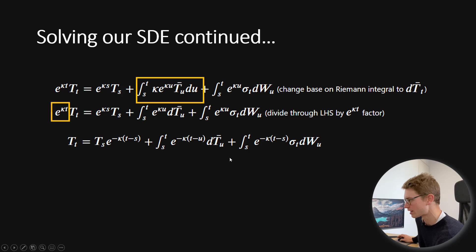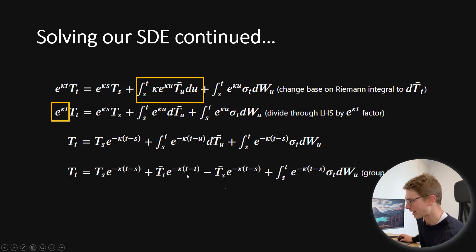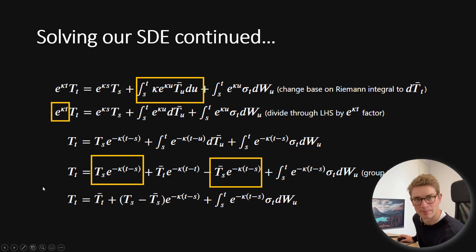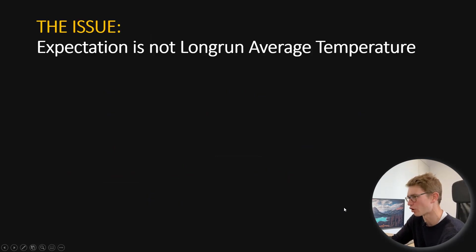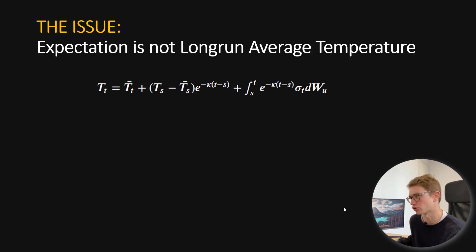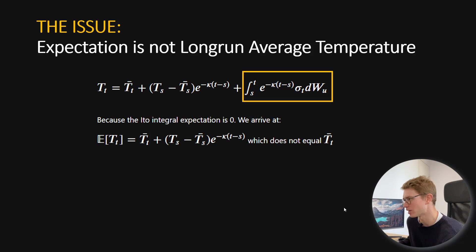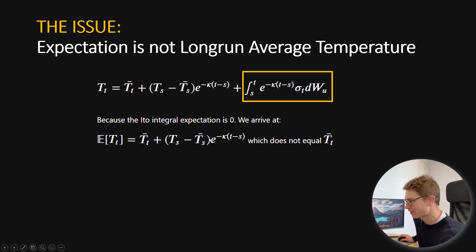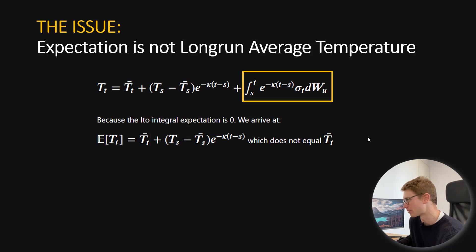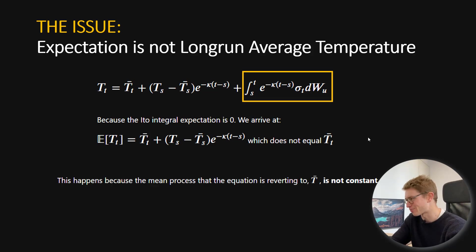We can take the integral over this domain and group like terms to arrive at our final temperature solution. The big issue is that the expectation is not the long-run average temperature. This is our final solution for temperature under normal mean-reverting OU dynamics. Since the expectation of an Itô integral is zero, the expectation equals the non-stochastic part — and that is clearly not T-hat, our daily average temperature. This happens because the mean process reverts to T-hat, but T-hat is not constant; it changes from one time step to another.